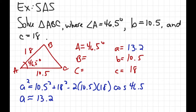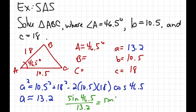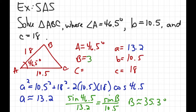Now to finish the problem, I need to find angles B and C. I'll use the law of sines to find angle B: sine of 46.5 over 13.2 equals sine of B over 10.5. Cross multiply, divide by 13.2, take the inverse sine, and angle B is approximately 35.3 degrees. Now knowing angles A and B, I subtract them from 180 to find angle C, and the triangle is solved.